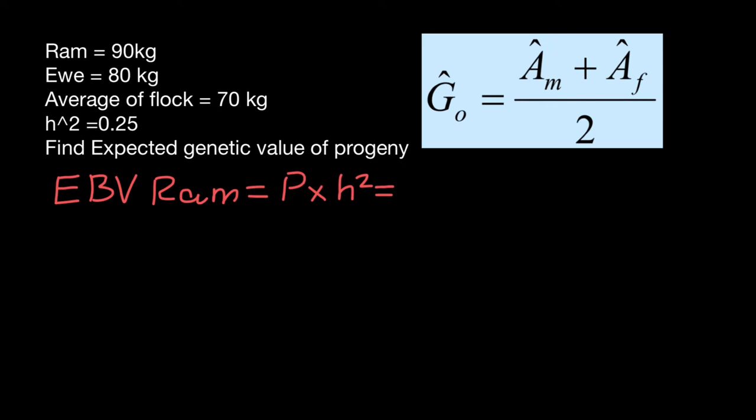Estimated breeding value of an animal - we have two parents here - would be deviation from the mean of the population. And because mean of the population is 70 kilograms, deviation would be 90 kilograms minus 70 kilograms.